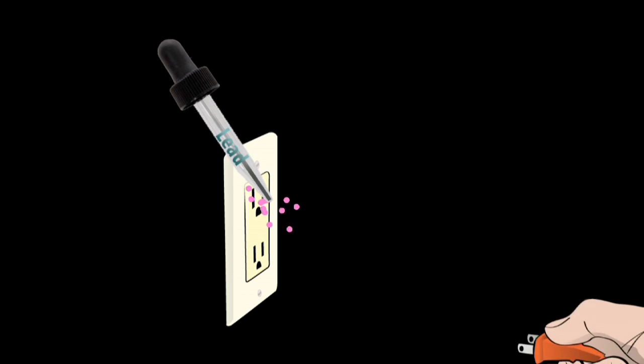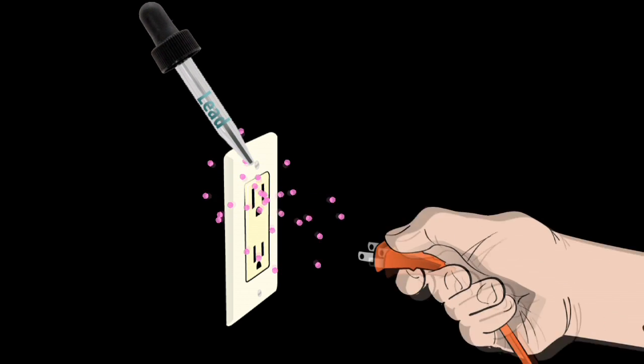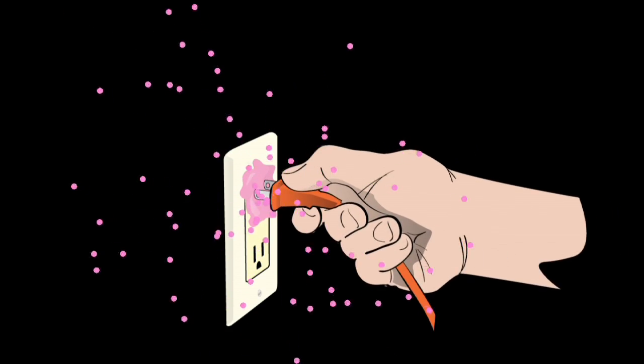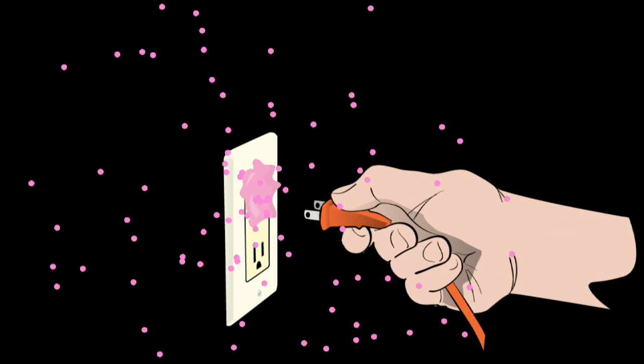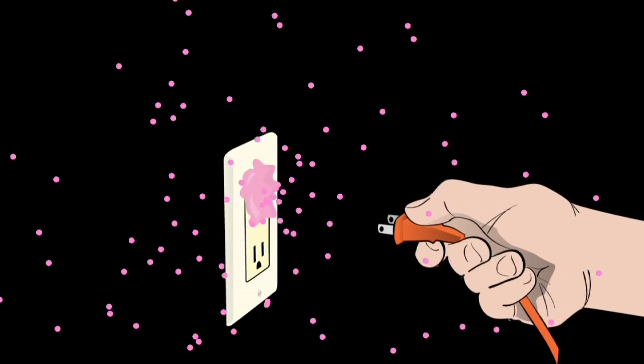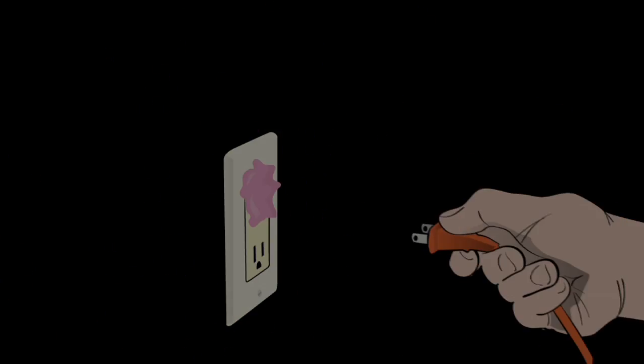If you have some lead in there, it can block the transmission — like putting chewing gum in a light socket. Lead interferes with dopamine, which interferes with learning, and then you have effects on brain size.